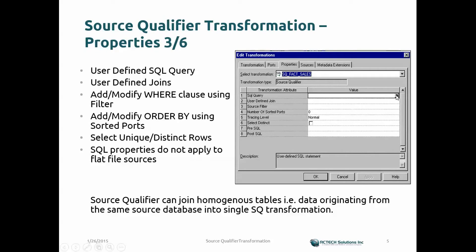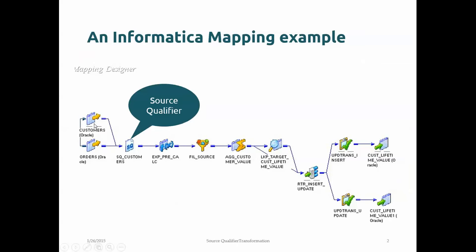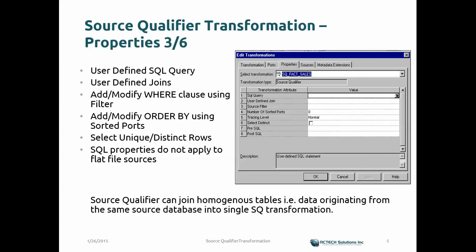When you click the SQL Query field, it opens a pop-up window where you can enter a custom SQL statement that queries the source records and applies your business logic. For User Defined Joins, for example in a customers-and-orders mapping, you define the customer table in Oracle as alias 'a' and orders table as alias 'b', and define the join between them on the customer ID field.